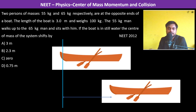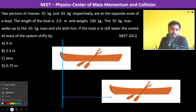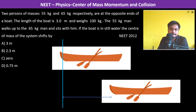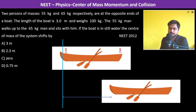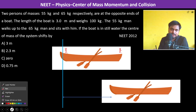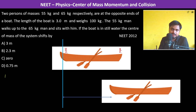Two persons of masses 55 kg and 65 kg respectively are at the opposite ends of a boat. The length of the boat is 3 meters and its weight is 100 kg. The 55 kg man walks to where the 65 kg man sits. The question asks how much the center of mass of the system shifts. Since there is no external force, F external is equal to zero.